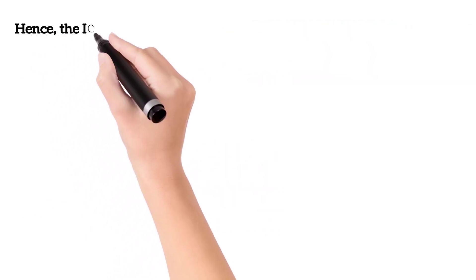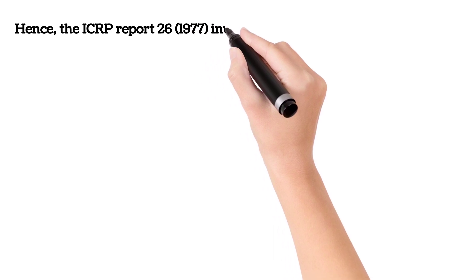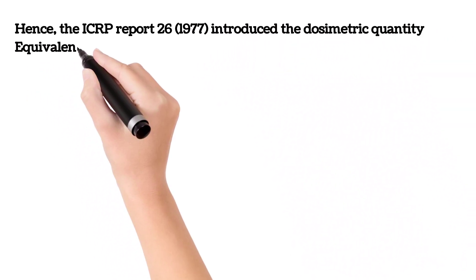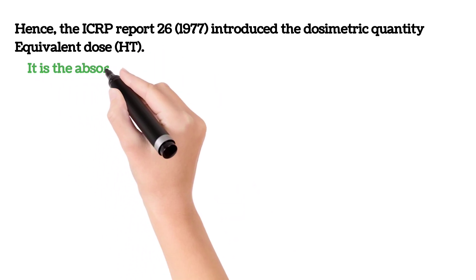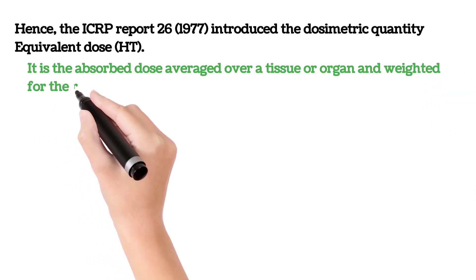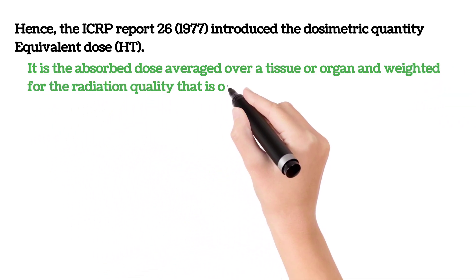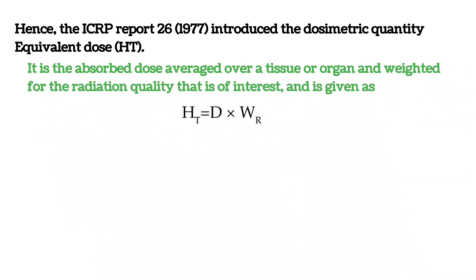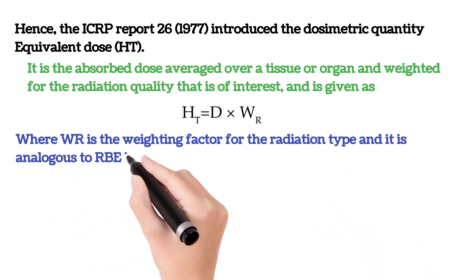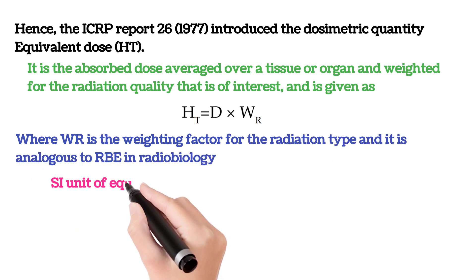Hence, the ICRP report 26 introduced the dosimetric quantity equivalent dose. It is the absorbed dose, averaged over a tissue or organ, and weighted for the radiation quality. It is given by the formula: absorbed dose multiplied by radiation weighting factor, where WR is the weighting factor for the radiation type and is analogous to RBE in radiobiology.